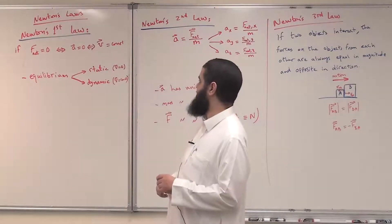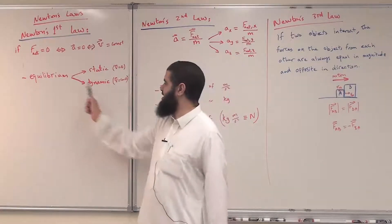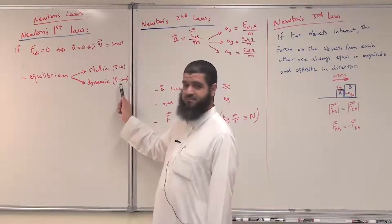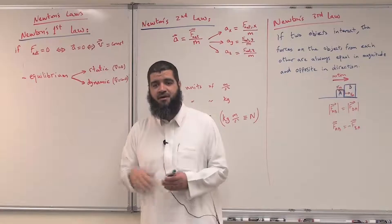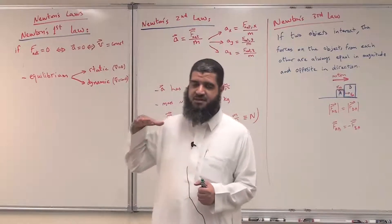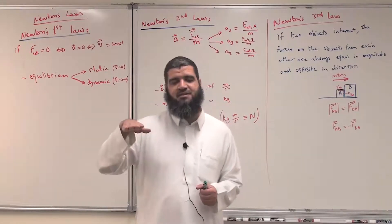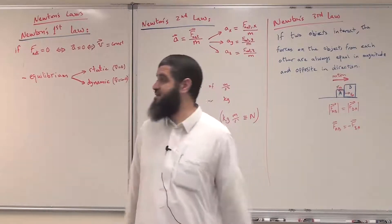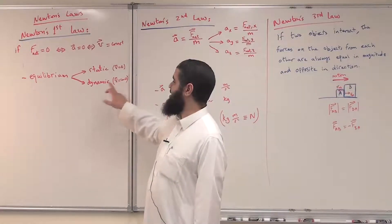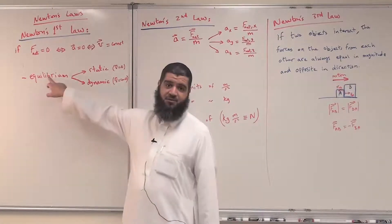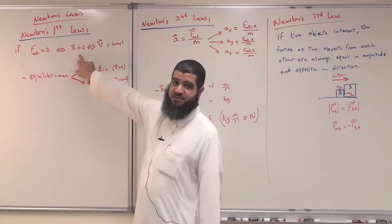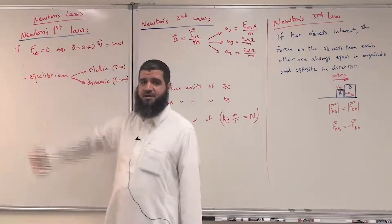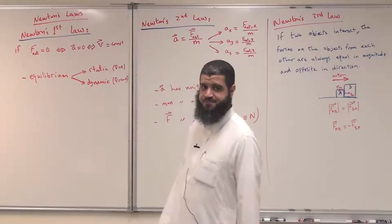Another type of equilibrium is dynamic equilibrium — when the object is moving with constant velocity. For example, if a car is moving in a straight line at a constant speed of 120 km/h with no change in direction, we say that car is in dynamic equilibrium: its acceleration is zero and the net force on it is zero.